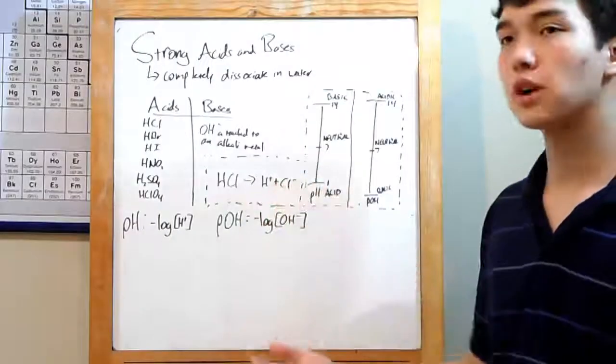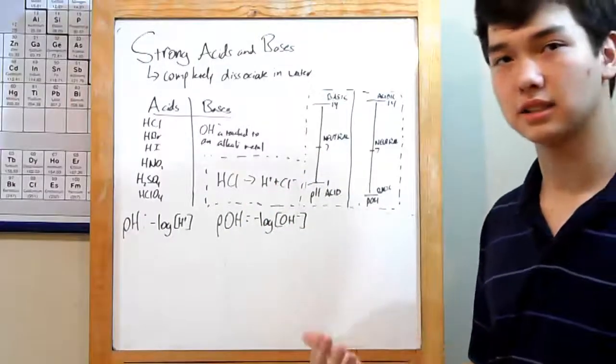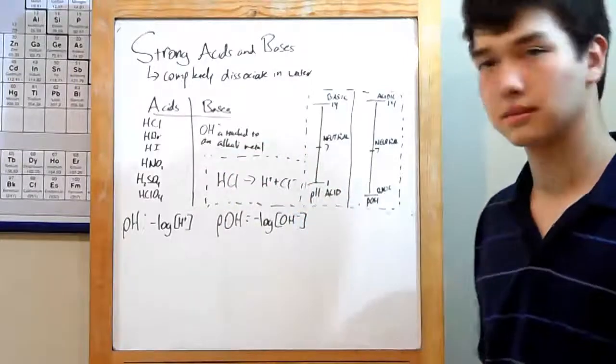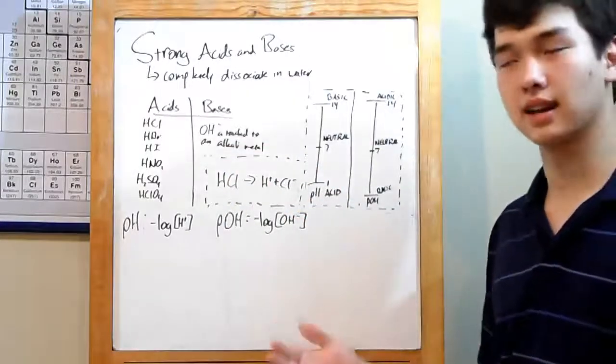Bases. The strong bases are any alkali metal attached to a hydroxide ion, OH-. Easy enough. Weak bases, again, everything else.